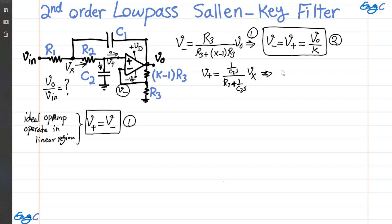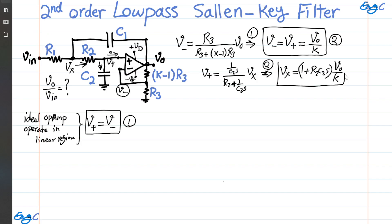Shuffling things around, Vx equals 1 plus R2·C2·s, times V-positive. From equation two, substituting V-positive with Vout over K, we get Vx equals (1 plus R2·C2·s) times Vout over K. Let's keep this as equation number three.